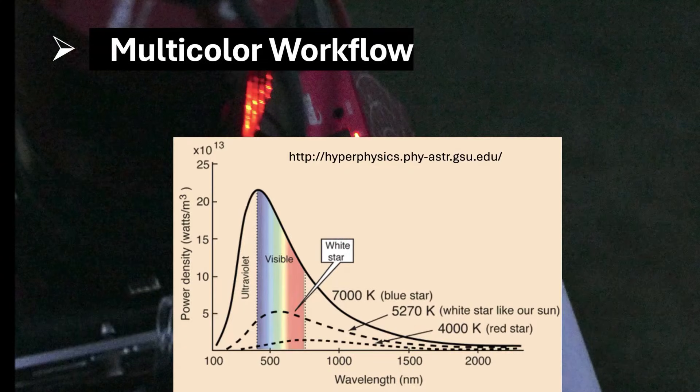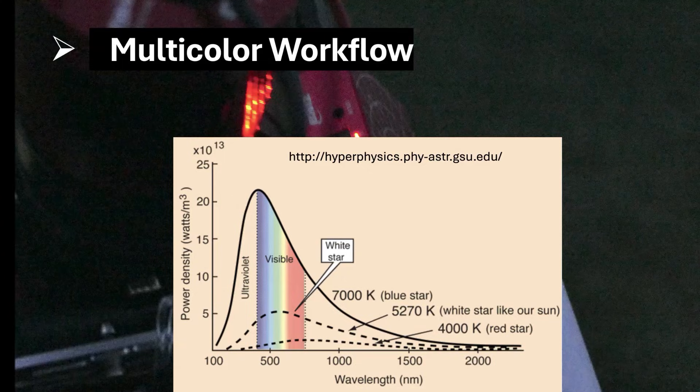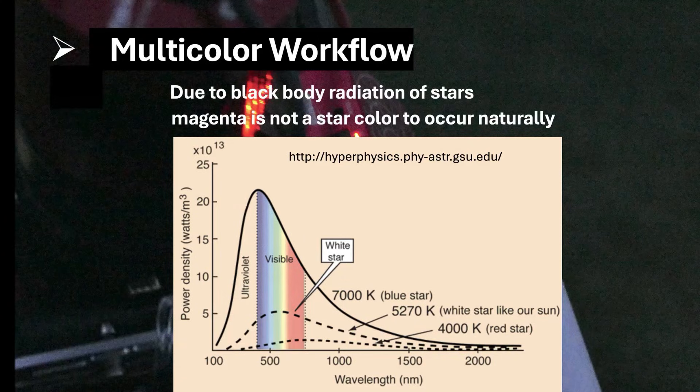When we look to the emission spectrum of stars, we will notice that the intensity of the short wavelengths and the long wavelengths are typically lower than the maximal. And that is due to the fact that stars are black-body radiators.